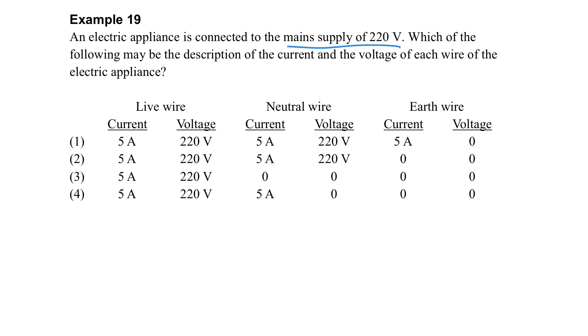Let's take a look at the example here. Live wire, neutral wire, and earth wire - what should be the normal voltage and current? We can see all the options in the live wire are the same. The neutral wire has zero voltage but there is current. The current of the neutral and the live wire should be the same. For the earth wire, normally there should be zero current and zero voltage. So this is the normal case.